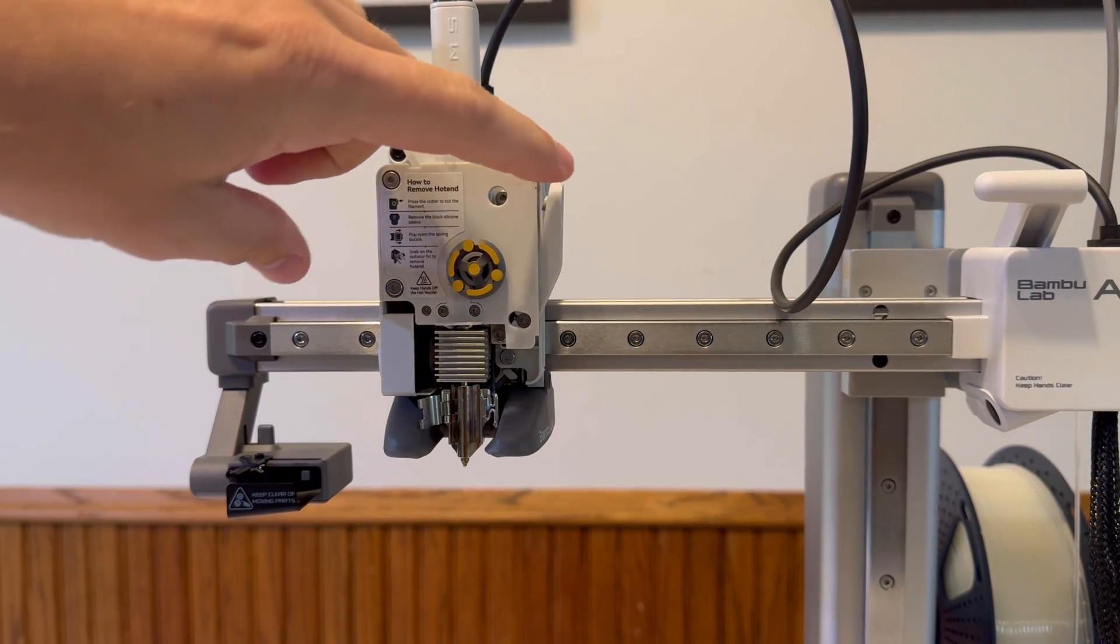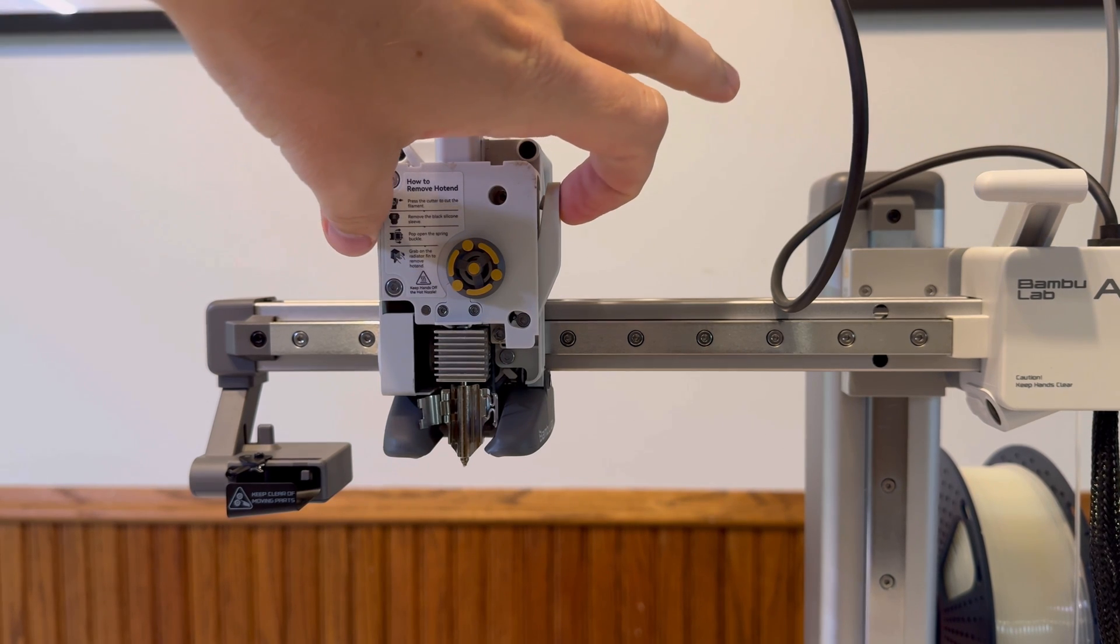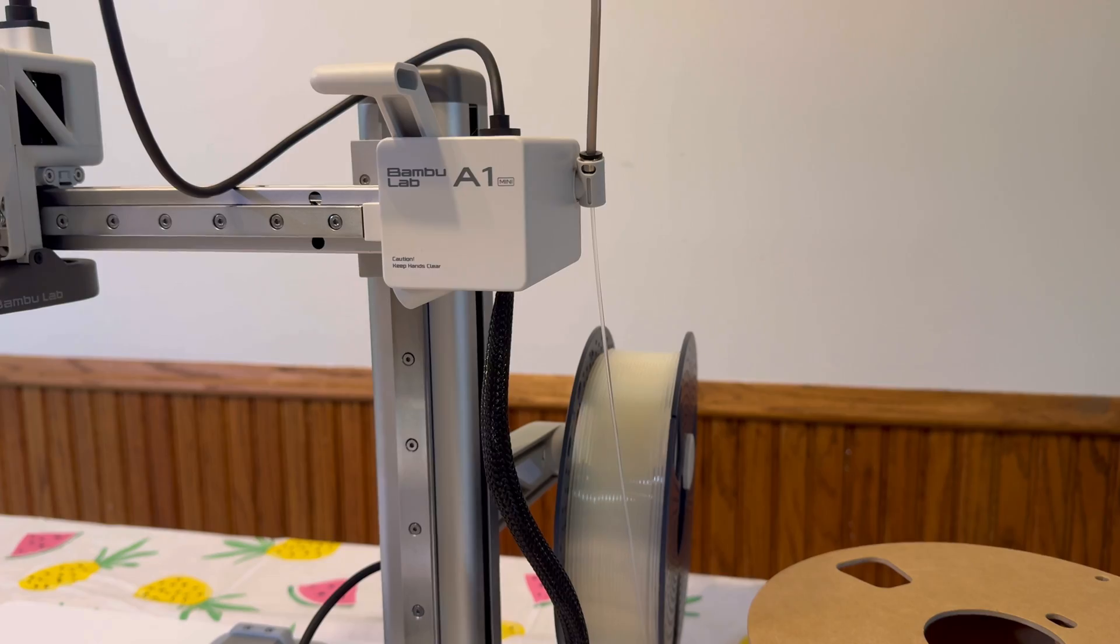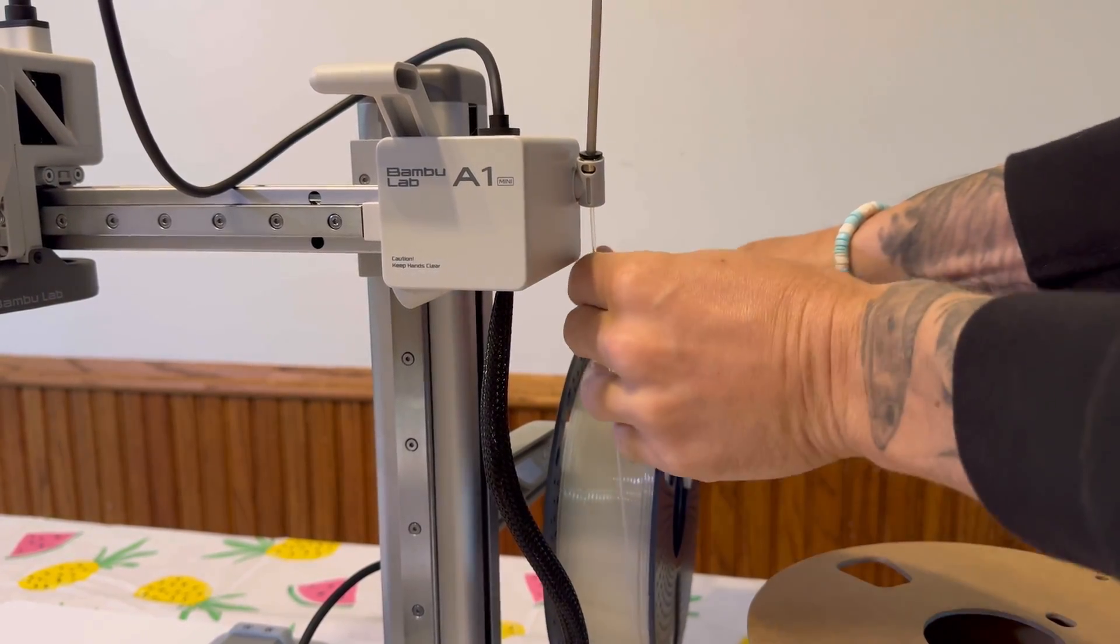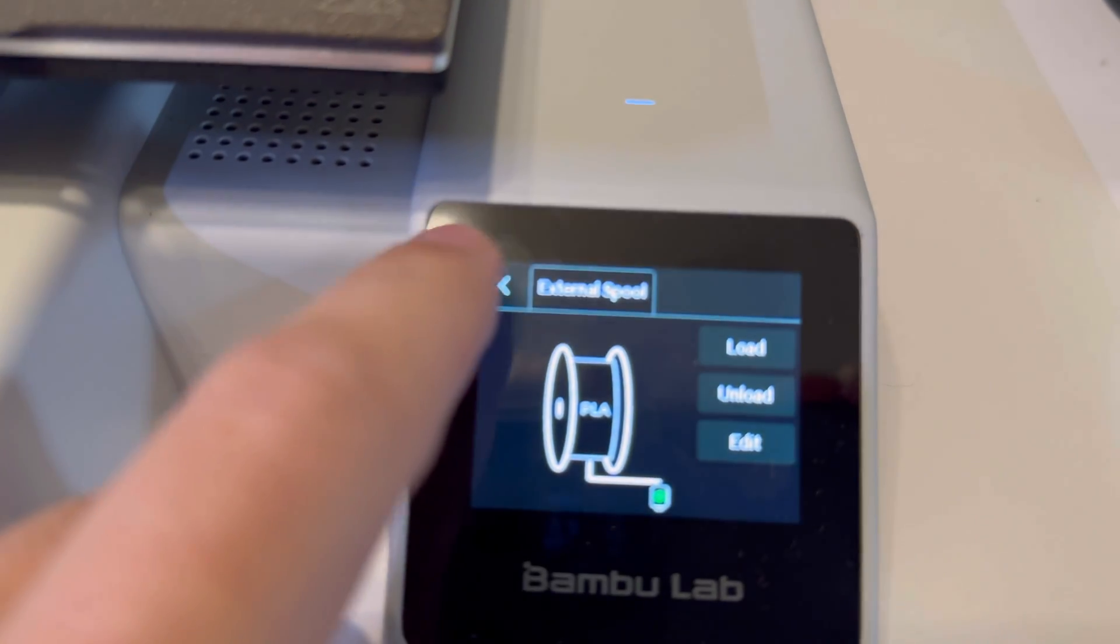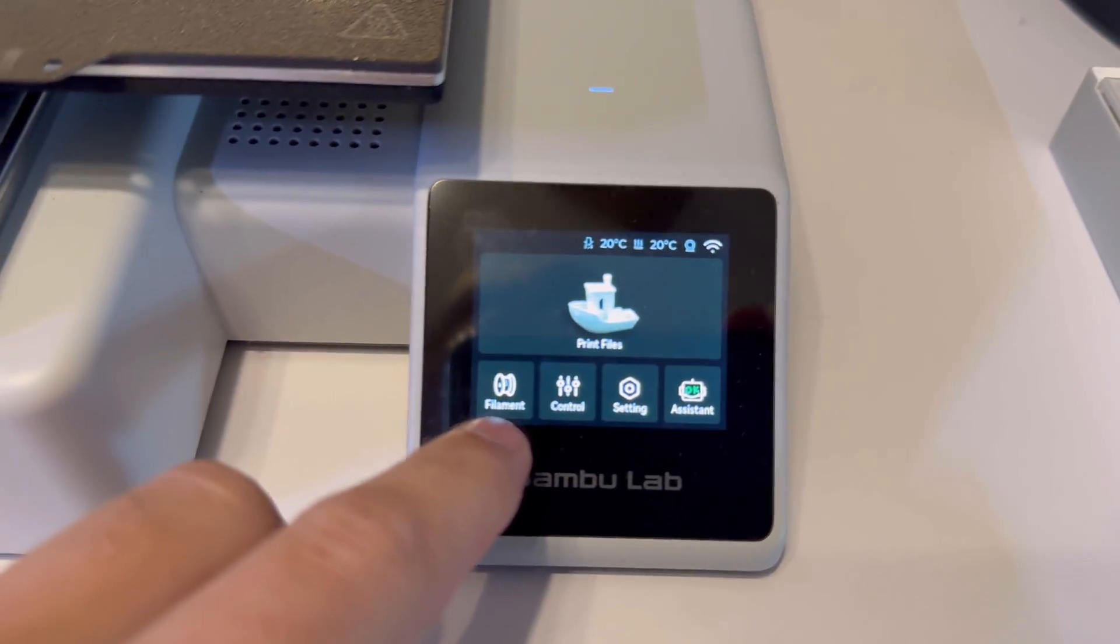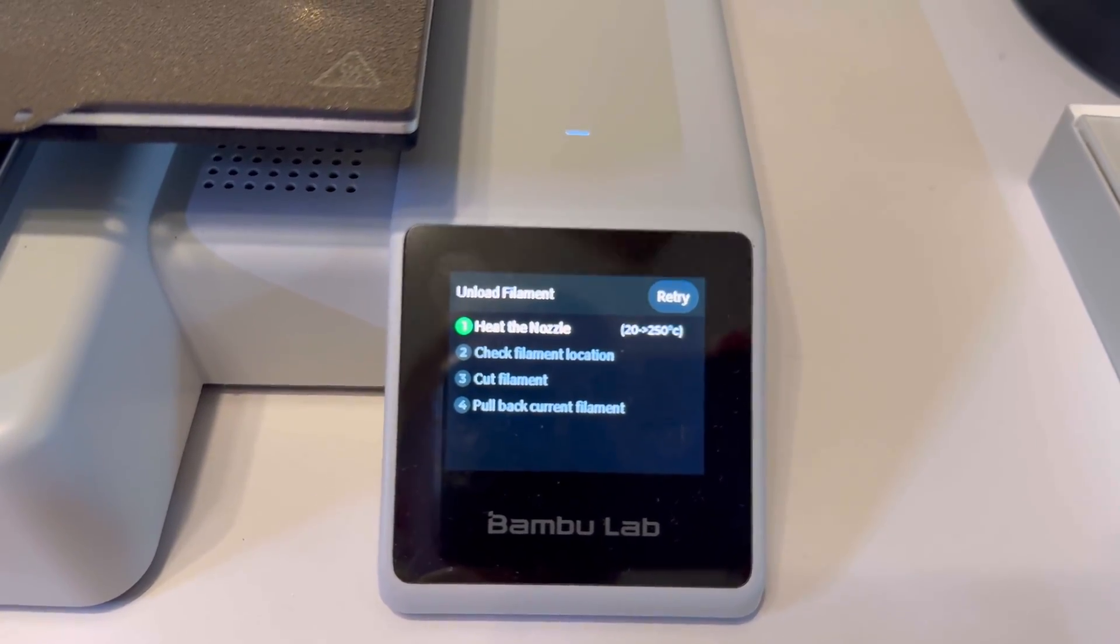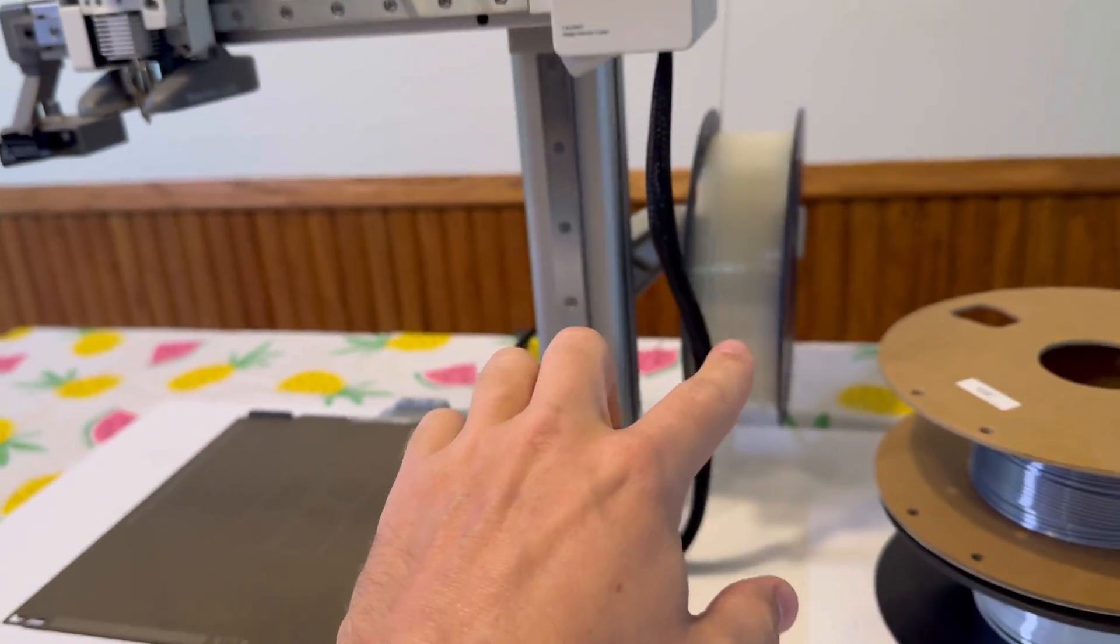Next what we want to do here is we want to cut the filament by using this side cutter. All we have to do is click this in here, give it a hard click. Then what we can do here is retract the filament so give that a little pull. If the filament is having issues what you can do is go to the main menu here and click on filament and then unload. It will then heat the nozzle and you'll be able to pull back the filament for sure.